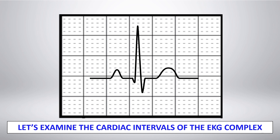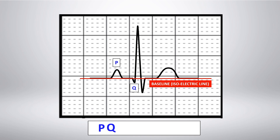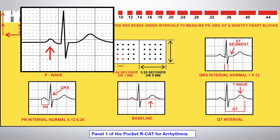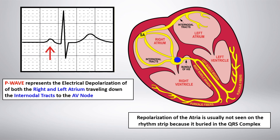Let's examine the cardiac intervals of the EKG complex. To measure the cardiac intervals, we use the P, Q, R, S, and T waves. Depending on the leads, the Q wave may not always be visible and the S wave may or may not extend below the baseline. The P wave represents the electrical depolarization of both the right and left atrium, traveling down the internodal tracks to the AV node. Repolarization is usually not seen on the rhythm strip because it is buried in the QRS complex.